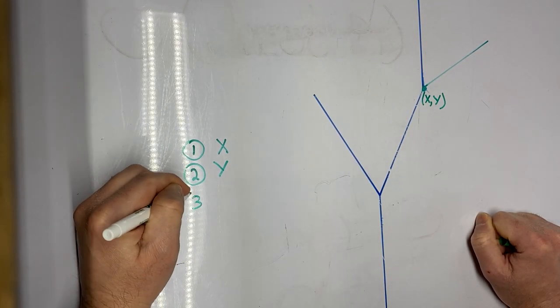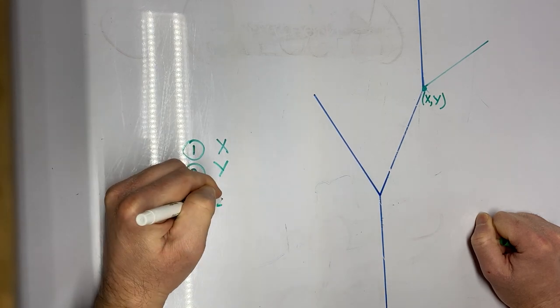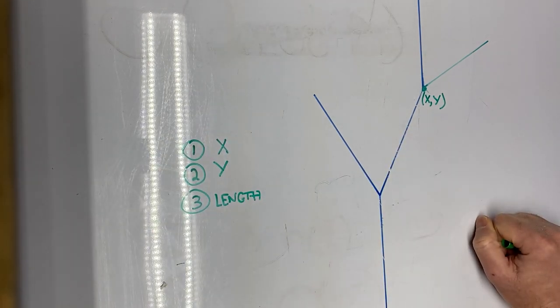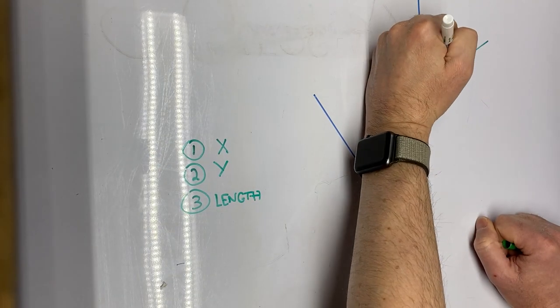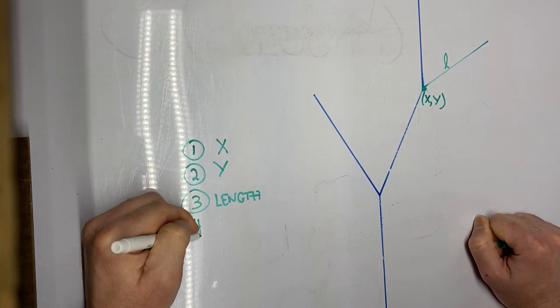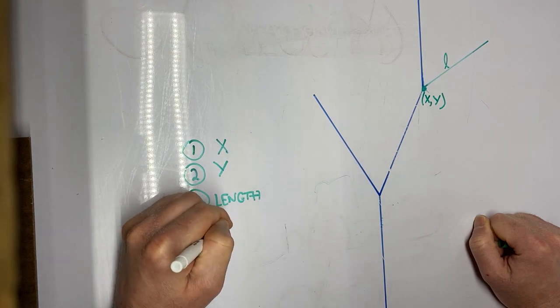The third parameter is the length of the branch to draw. And that is the length of this green branch. And I'm going to use a script L to represent the length of that branch in my diagram. And the fourth parameter is the angle.